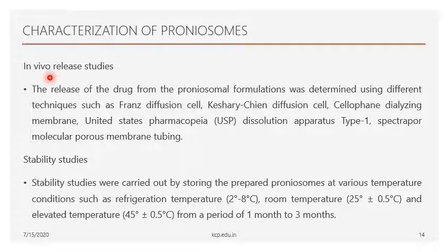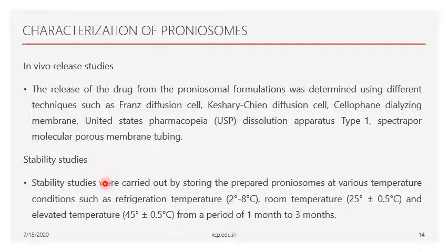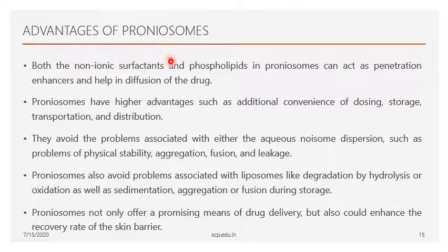In vitro drug release of proniosomes is studied using a Franz diffusion cell, cellophane dialyzing membrane, or a USP dissolution apparatus. A suitable analytical method is used to determine the amount of drug released over time. Stability studies are conducted under ICH guidelines, with samples stored at 2 to 8 degrees Celsius and room temperature and evaluated over a period of one to three months to determine whether the sample degrades.